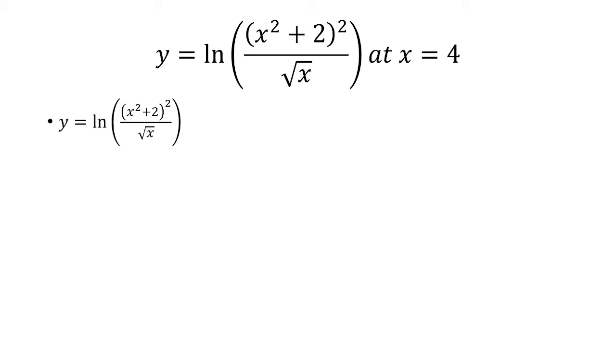So the first property is to break this up into two logs by subtracting. When we divide the inside, we separate it with a subtraction. So the square root of x will be part of the second natural log. We have natural log of x squared plus 2 squared minus natural log of square root of x.